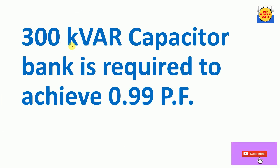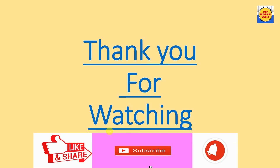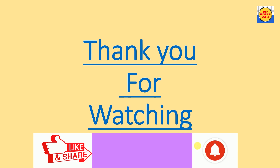A 300 kVAR capacitor bank is required to achieve a 0.99 power factor. Based on this, we can manufacture an automatic power factor correction panel or raise a purchase order accordingly. In this video we discussed how to calculate the capacitor bank size to achieve a desired power factor. Thank you for watching — please like, share, comment, and subscribe. See you in the next video.